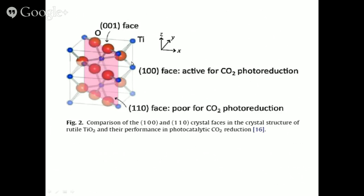For titanium dioxide, the 100 phase or the 110 phase matters significantly. For rutile, the 100 phase is active for CO2 photoreduction whereas the 110 phase is poor for CO2 reduction. When you have crystalline rutile, it cleaves mostly in these two phases, exposing them predominantly. Therefore if it is exhibiting the 110 phase it is not so good for CO2 photoreduction, whereas the 100 phase is good.